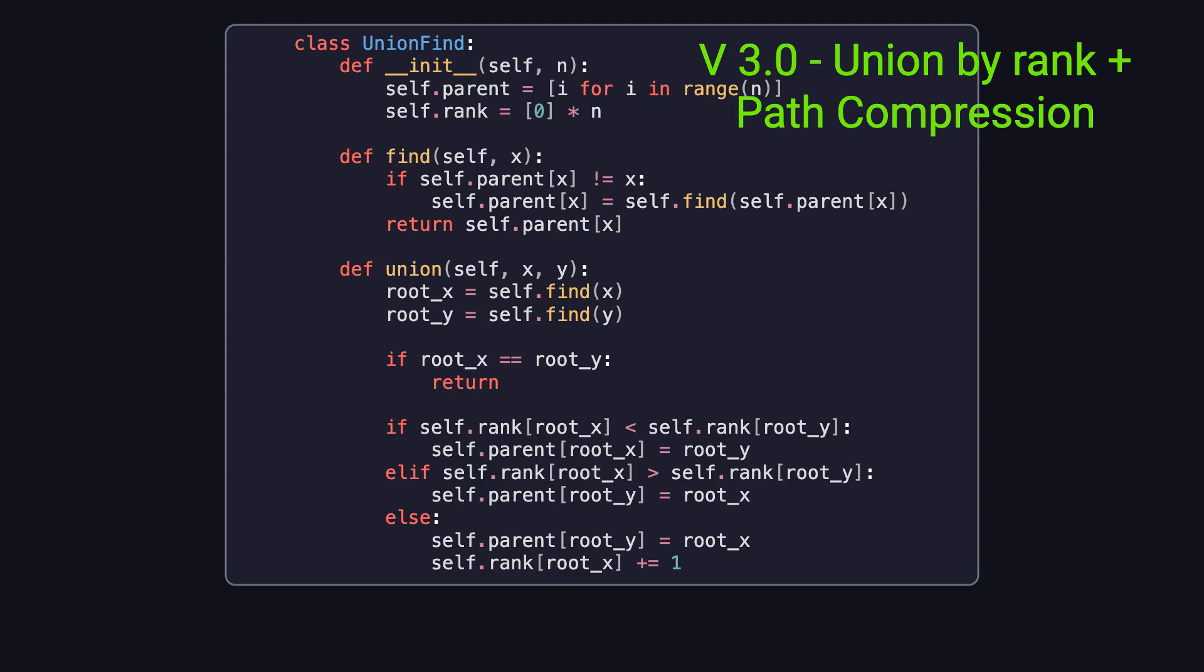Here's version 3.0 of UnionFind, where we add path compression on top of Union by rank. The main change is in the find method. Instead of using a simple loop to climb up the tree, we rewrite the find function recursively. If a node is not its own parent, we recursively call find on its parent. Once we find the root, we immediately update the current node to point directly to that root. The benefit of this optimization is significant. Every time we call find, we not only find the root, but also flatten the path along the way. As a result, any future find operations on those nodes will be much faster, almost instant.